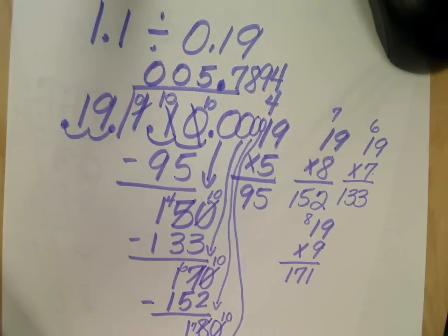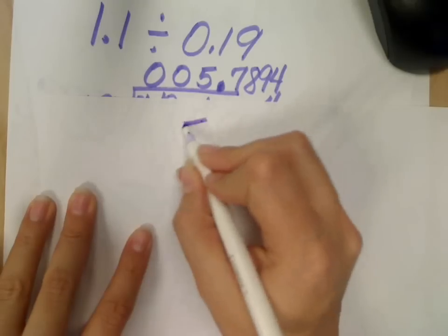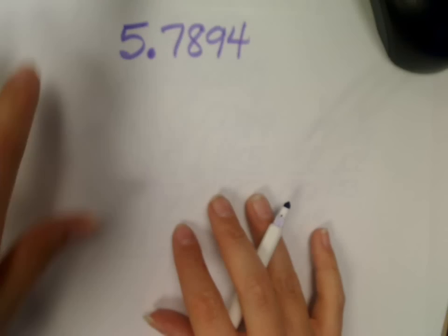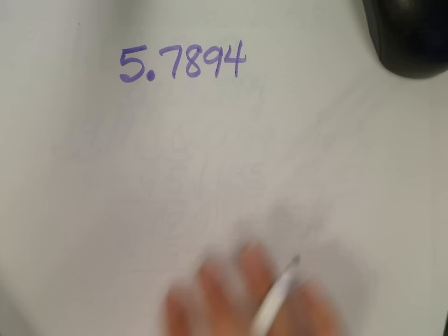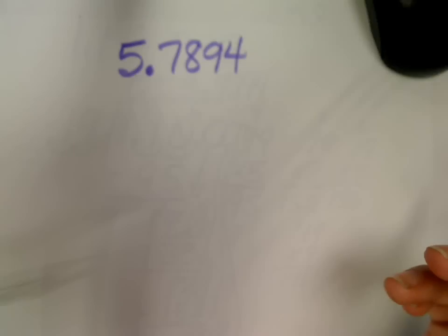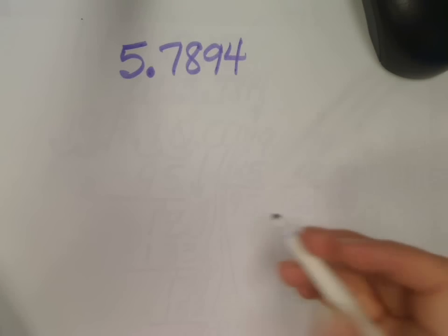So, I'm going to rewrite it on a clean sheet, so that we can figure out how to round it. Five decimal point, seven, eight, nine, four. So this is what my answer looks like, and my directions say, round to the nearest thousandths, if necessary. Well, it's necessary, because my number is going to keep going on and on.